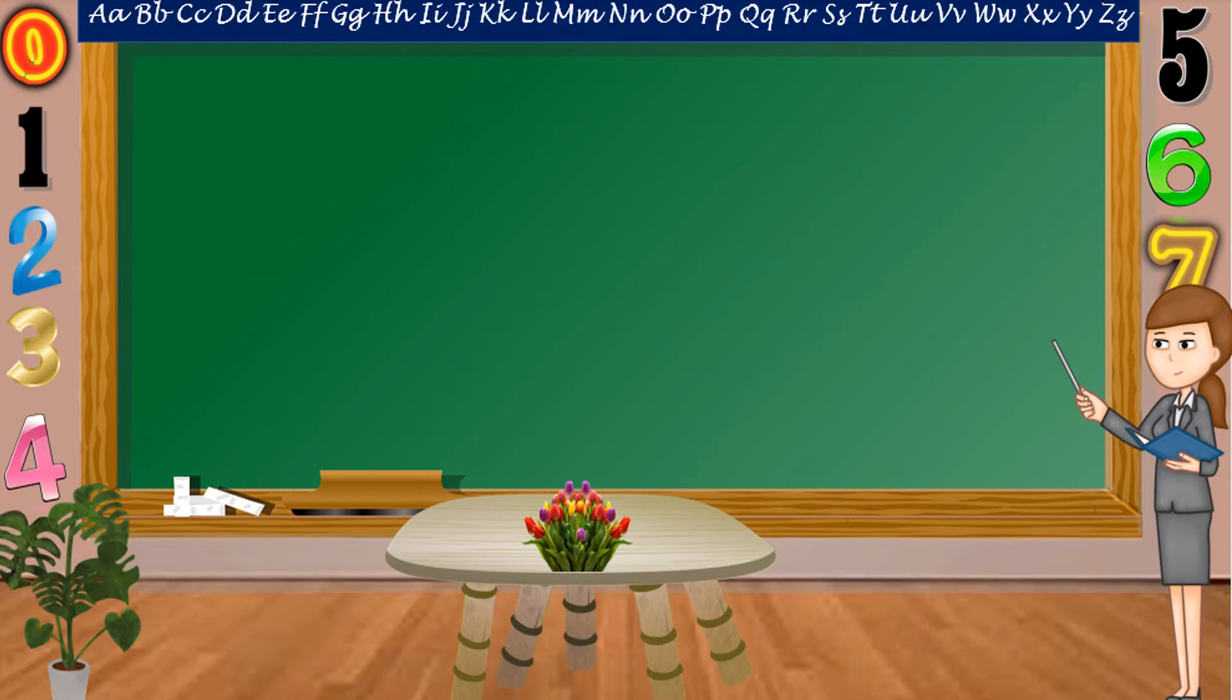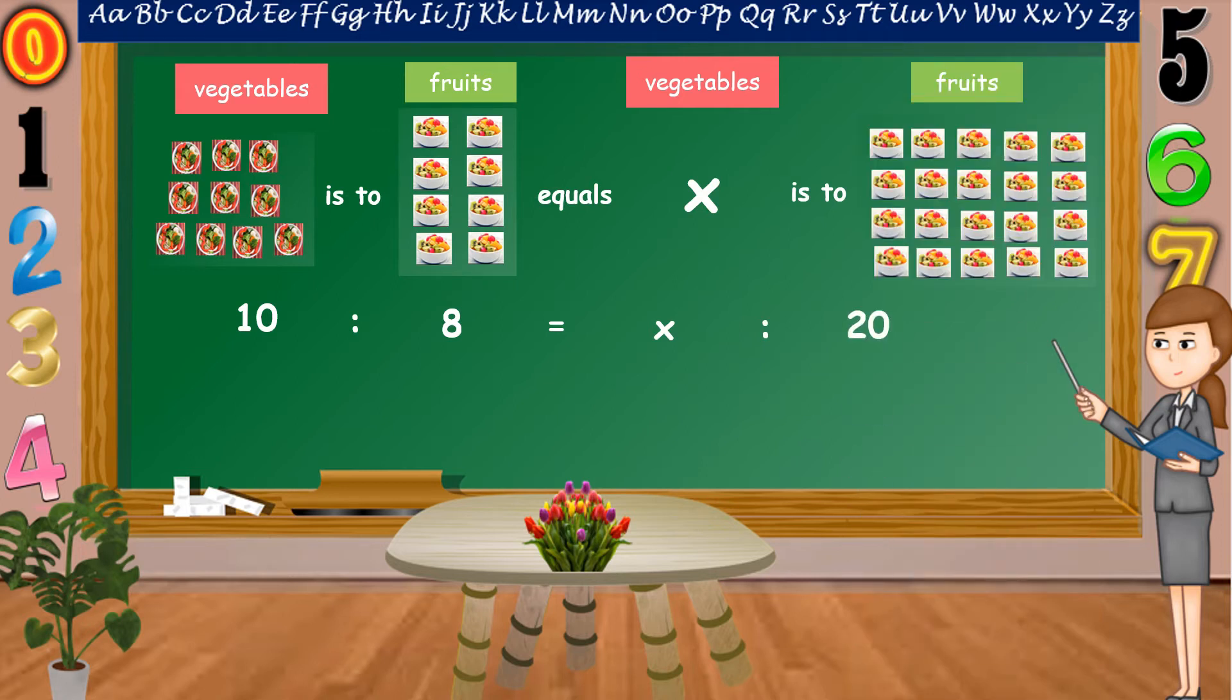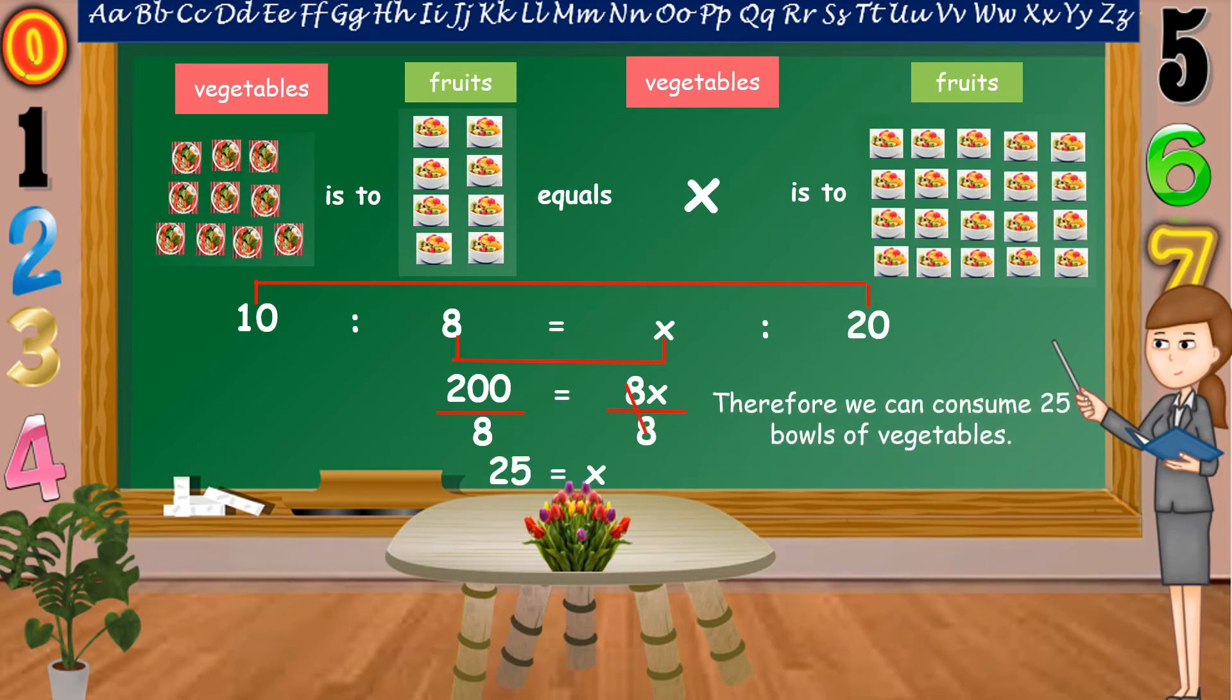To answer our problem, let's illustrate it using a proportion. For every 10 bowls of vegetables, correspond to 8 bowls of fruits. So, how many bowls of vegetables if we can consume 20 bowls of fruits? To get the answer, let's multiply the extremes and the means. So, 10 times 20 is equal to 200, 8 times x is equal to 8x. To get the value of x or our vegetables, we're going to divide 8 both sides of the equation. So, 8x divided by 8 is equal to x and 200 divided by 8 is equal to 25. Therefore, we can consume 25 bowls of vegetables.